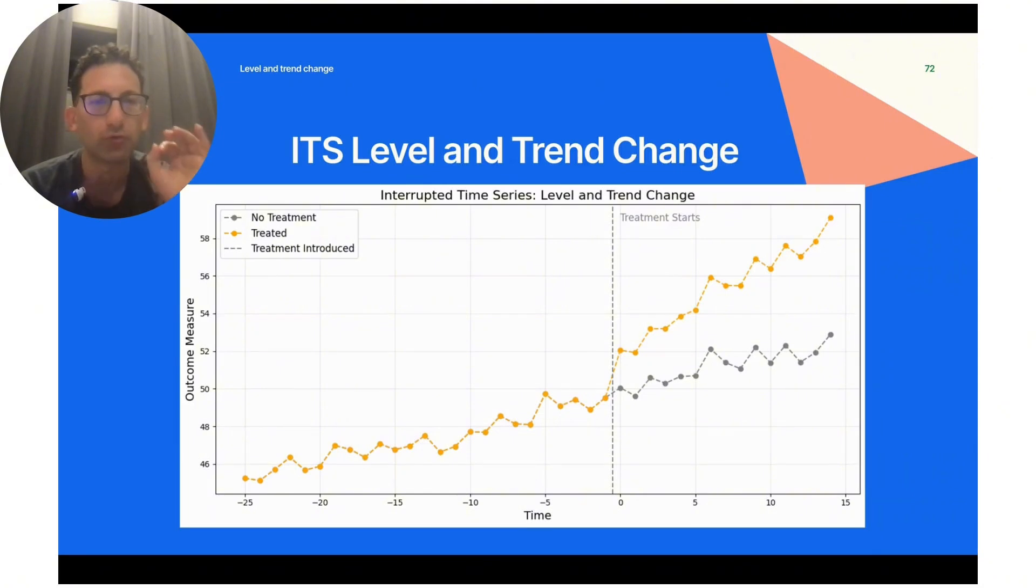One thing to be careful about is extrapolation, especially thinking too far out in the future. In this interrupted time series, the gray line represents what the population would have done without treatment, and the gap between that and the orange line—what actually happened—we refer to as the treatment effect.